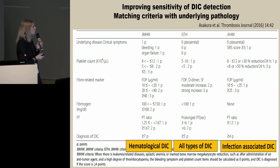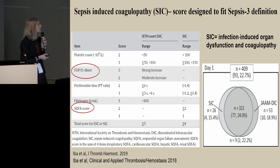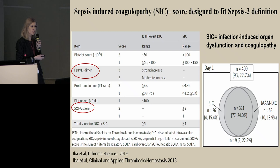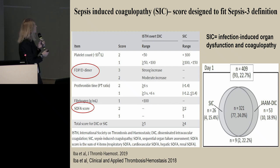The JAAM score includes the SIRS score. However, since SIRS was removed from the sepsis-3 definition, we now have a new score designed to fit that definition: the sepsis-induced coagulopathy (SIC) score. This is a very easy score that identifies patients at a stage earlier than DIC. It includes only three elements: platelet count, prothrombin time, and SOFA score.